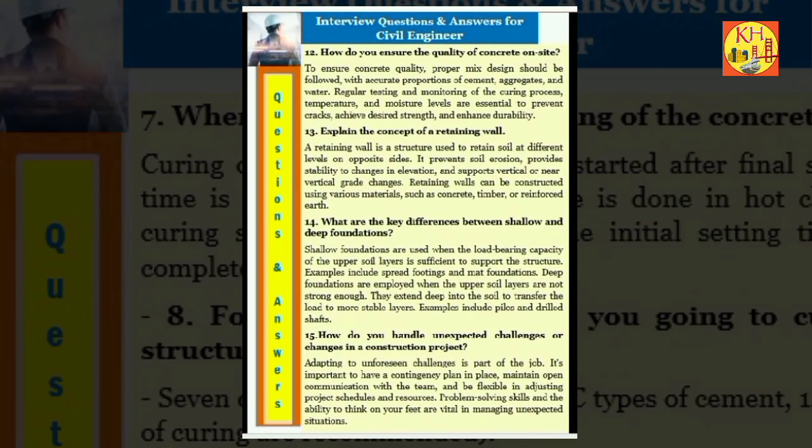Question 12: How do you ensure the quality of concrete on site? To ensure concrete quality, proper mix design should be followed with accurate proportions of cement, aggregates, and water. Regular testing and monitoring of the curing process, temperature, and moisture levels are essential to prevent cracks, achieve desired strength, and enhance durability.